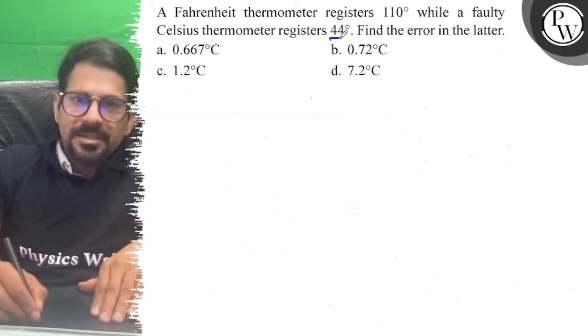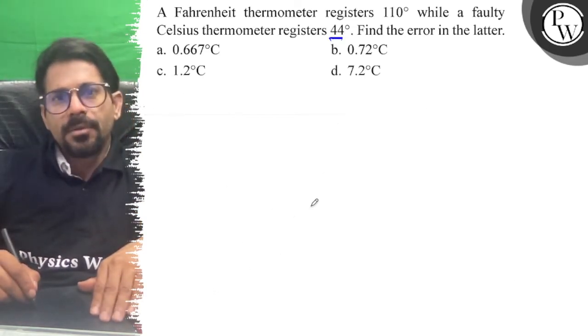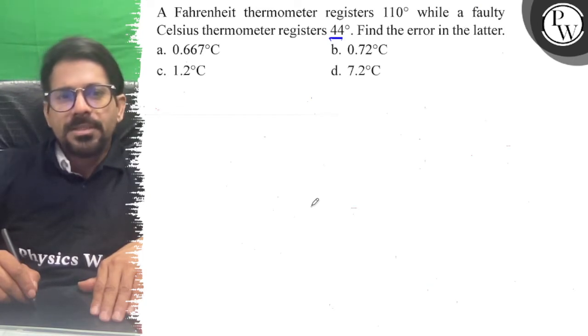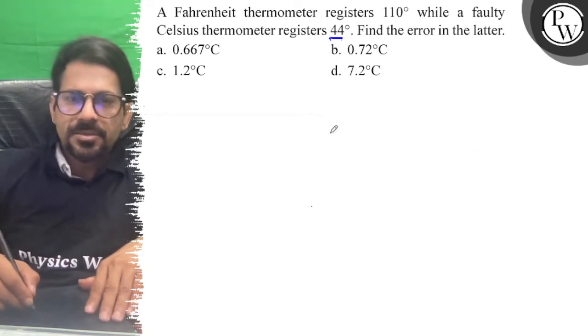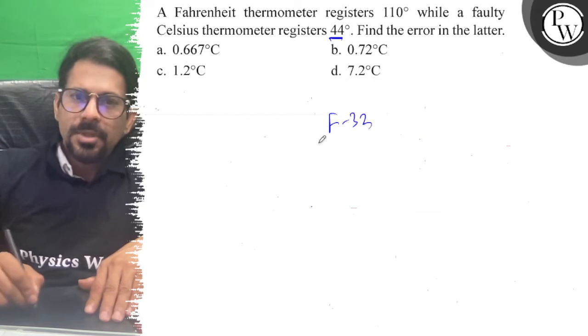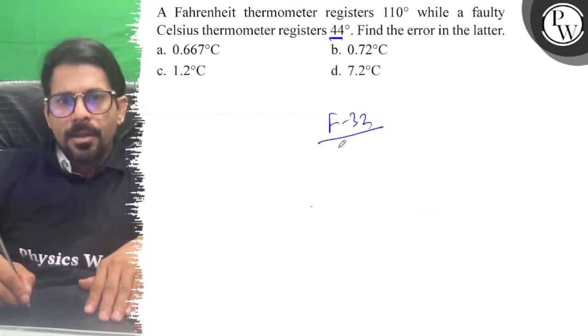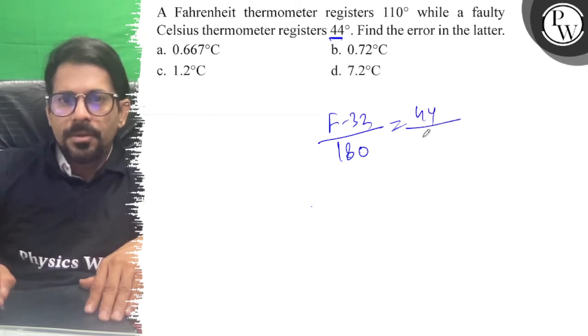So Celsius reads 44, faulty Celsius thermometer registers. So F-32 upon 180 is equal to 44 upon 100.